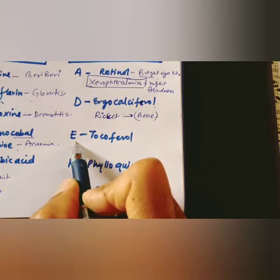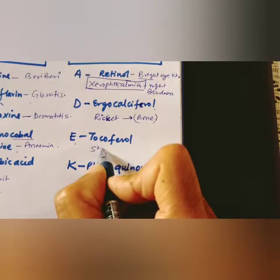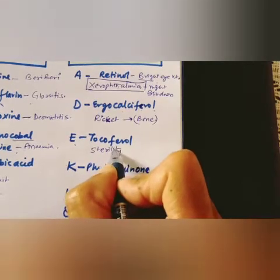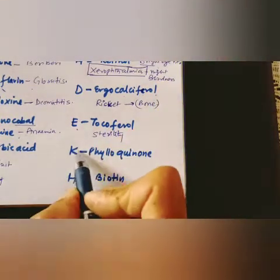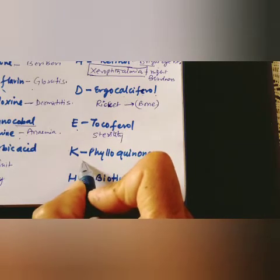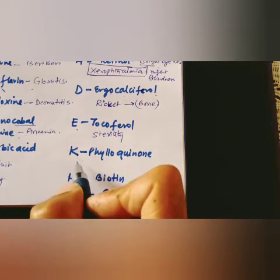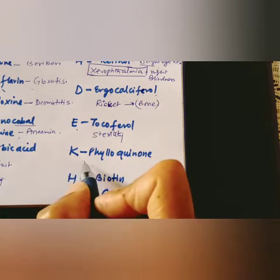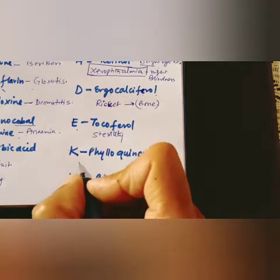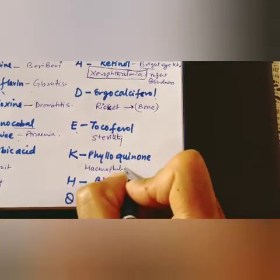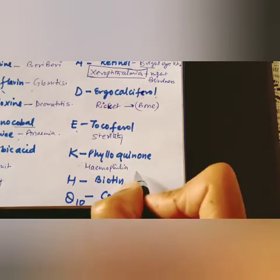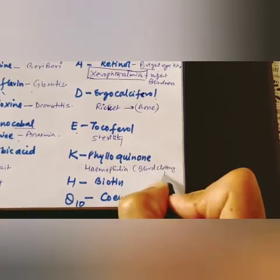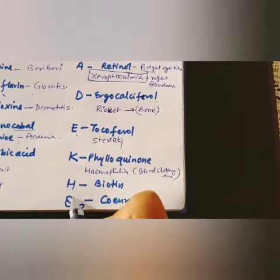Vitamin E is tocopherol. Sources include cotton seed oil, soybean oil, wheat germ oil, and sunflower oil. Its deficiency can cause sterility — reproductive problems especially in females. Vitamin K is phylloquinone, important for blood clotting. Sources are cereals and green leafy vegetables. Deficiency of vitamin K causes hemophilia — a hemorrhagic condition with increased blood clotting time and excess blood loss.